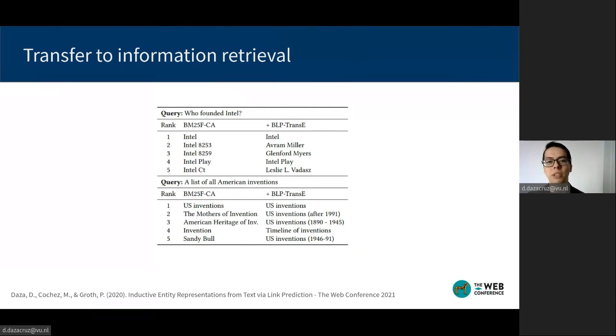When observing a particular example, we know that while BM25 retrieves documents based mostly on string matching, introducing BLP helps to retrieve semantically related documents. In the first example, in the query, who founded Intel.